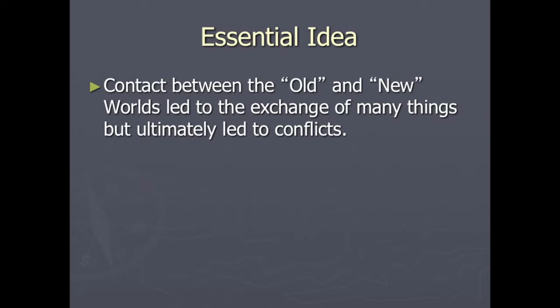In American history, whenever we refer to the old world, we are referring basically to the countries of the eastern hemisphere — Europe, Africa, and Asia. When we talk about the new world, we're talking about the Americas. To use the word 'old' is kind of Eurocentric because it assumes Europe and Africa and Asia were older than the Americas. But as you'll see, the so-called new world had been around for quite a while, developing independently for tens of thousands of years, and then all of a sudden the two worlds come into contact with one another.